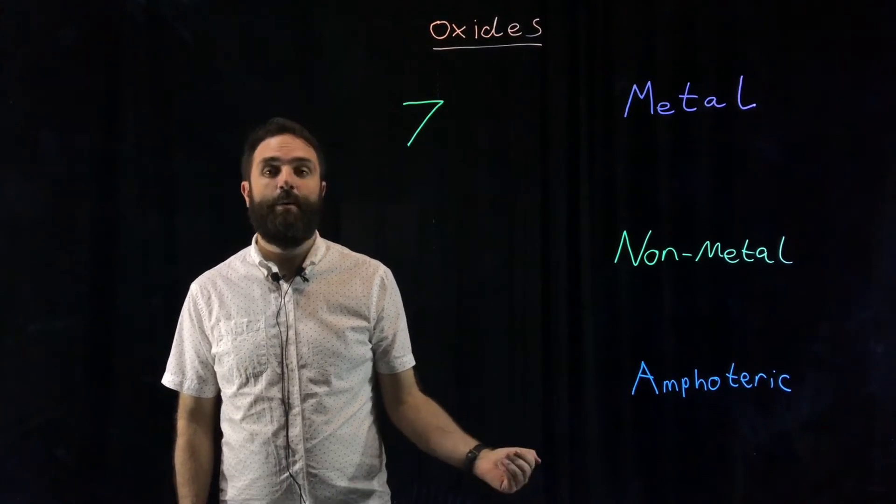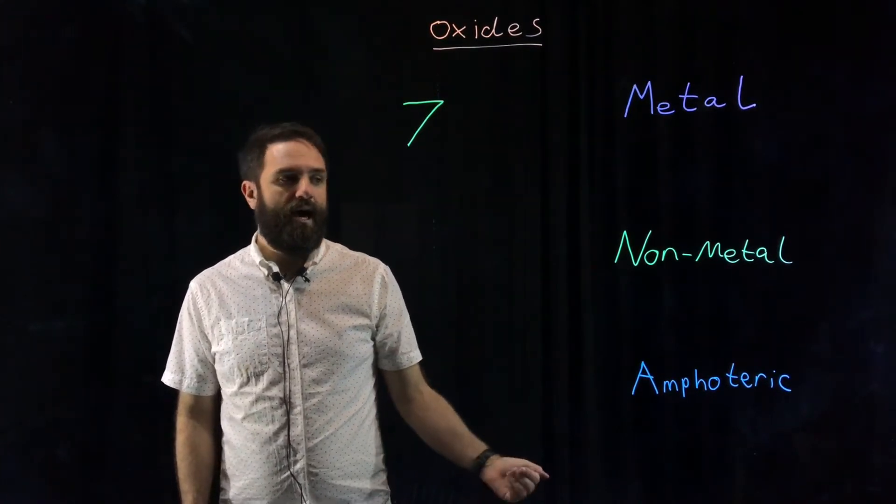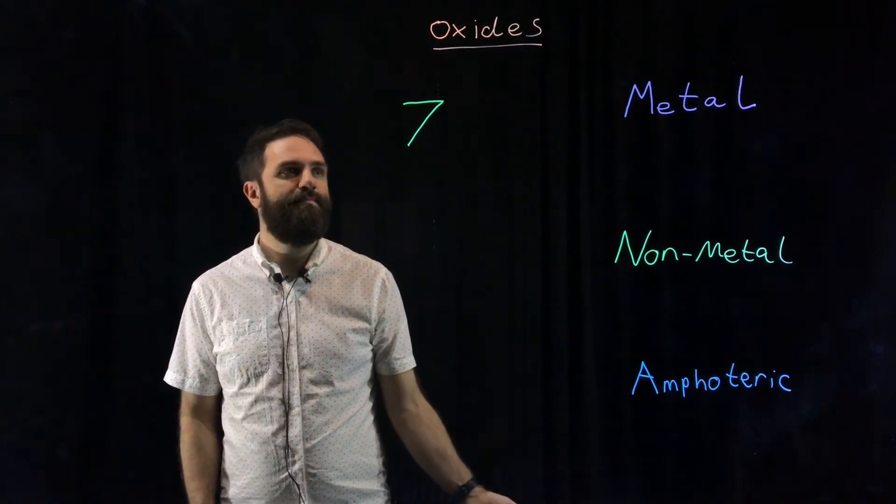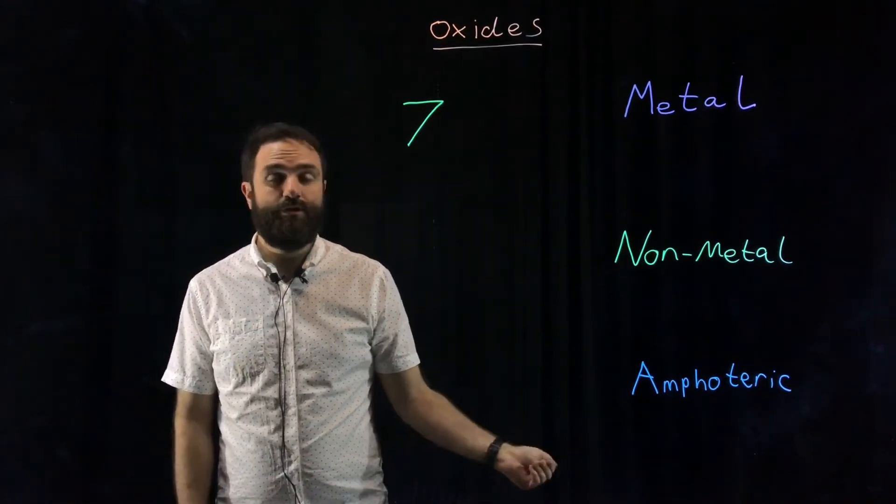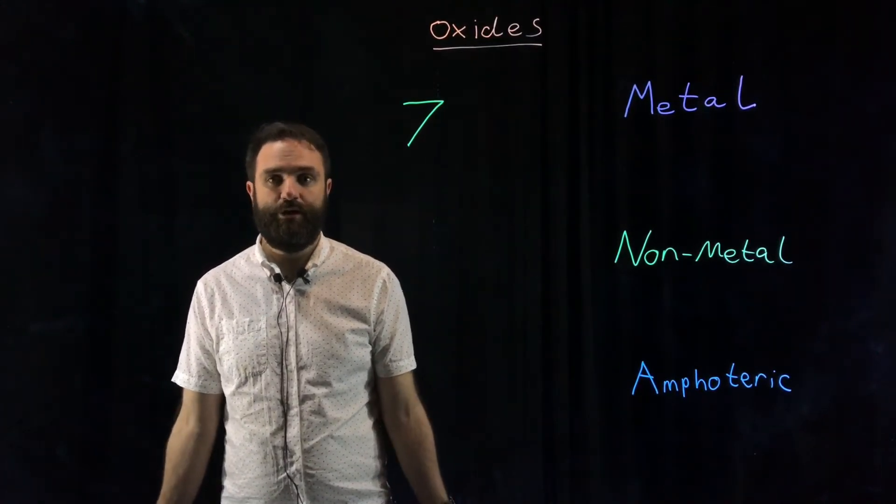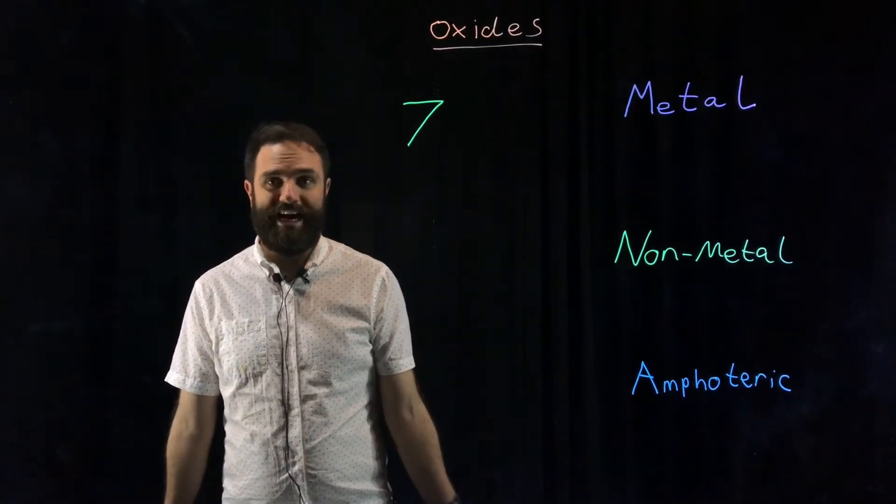Bases have a pH higher than seven and are proton acceptors. If they're soluble in water, they are what we call alkalies. Our first classification is neutral substances, things like salts. Salts are completely neutral substances. They don't react to produce anything with acids or with bases.